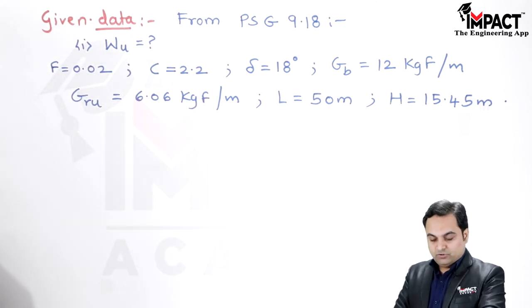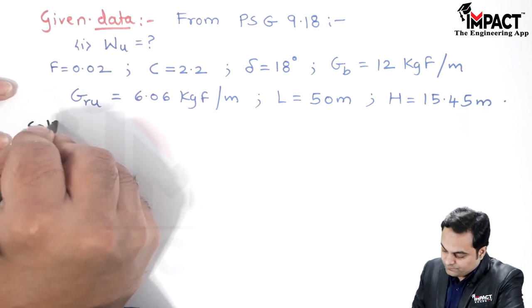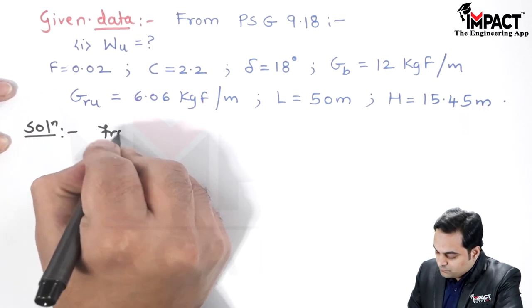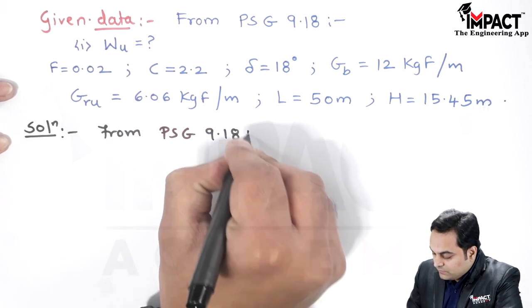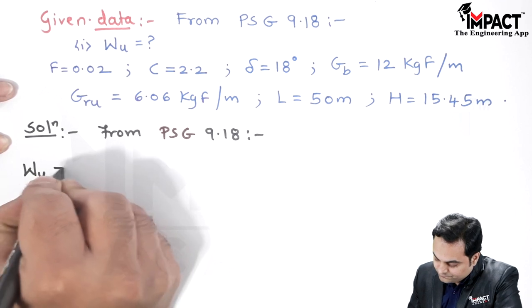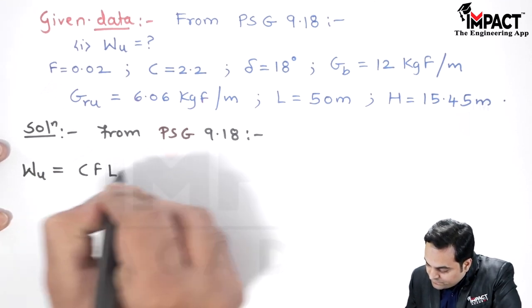So into the solution part. Since from the same reference PSG 9.18, the weight on the bottom run is given by the formula: it is cfl...